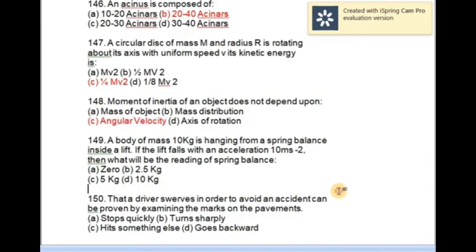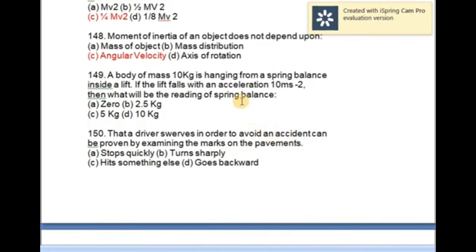A body of mass M, 10 kg, is hanging from a spring balance inside a lift. If the lift falls with an acceleration 10 m per second square, then what will be the reading of spring balance? The correct option is zero.